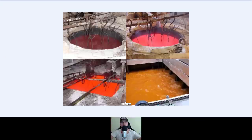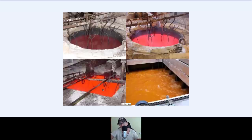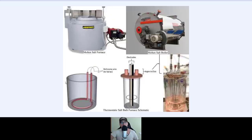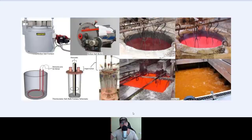Now let's compare lava and molten salt. This is like what we use in industry as a human species — molten salt industry-wise. I believe some of you may even be workers in these types of factories: molten salt furnace, molten salt boiler, thermostatic salt bath furnace schematic, etc. It can be done in labs and in industry.